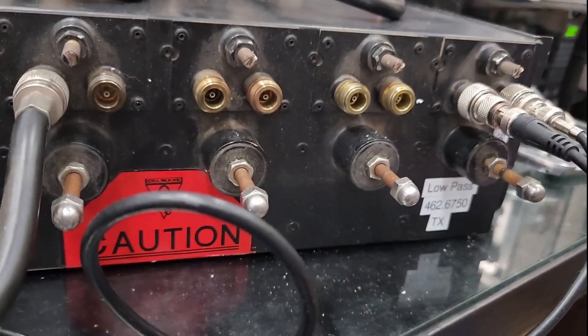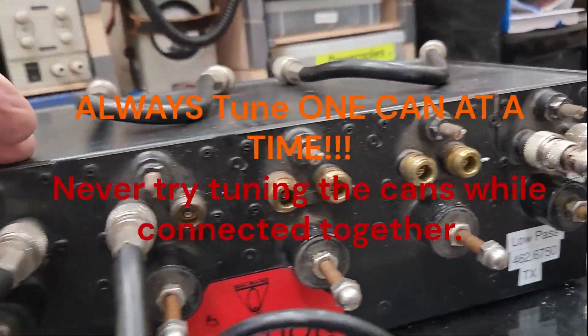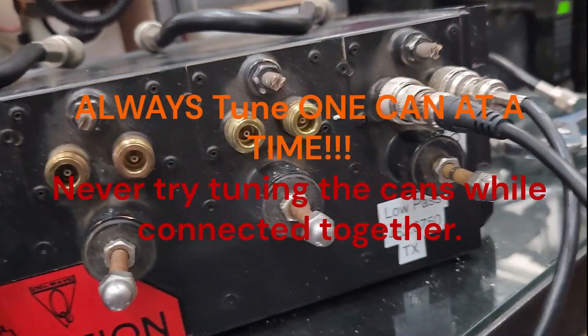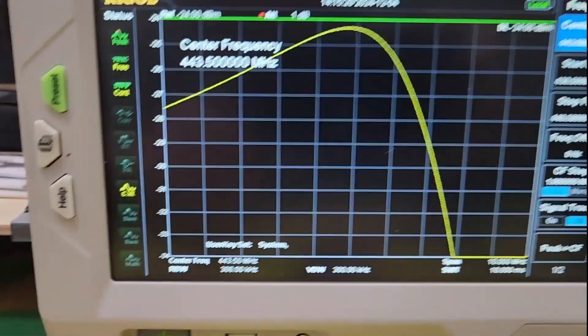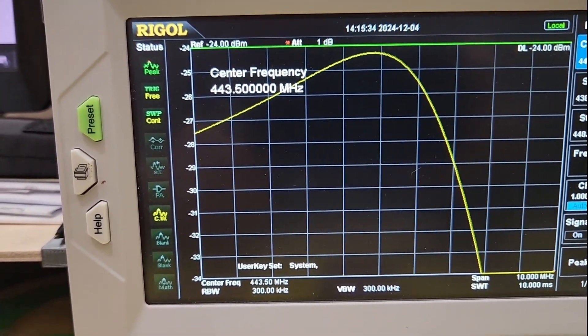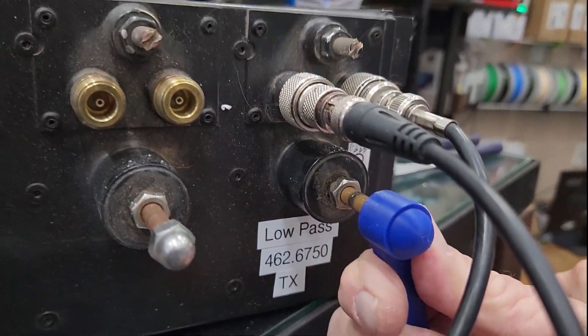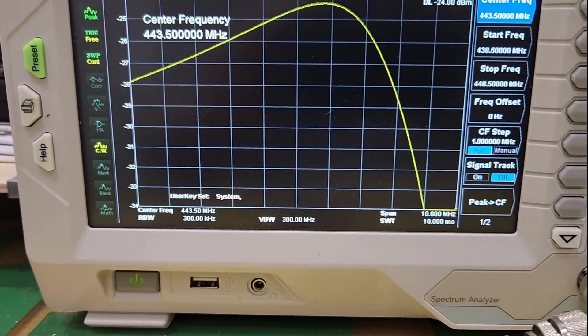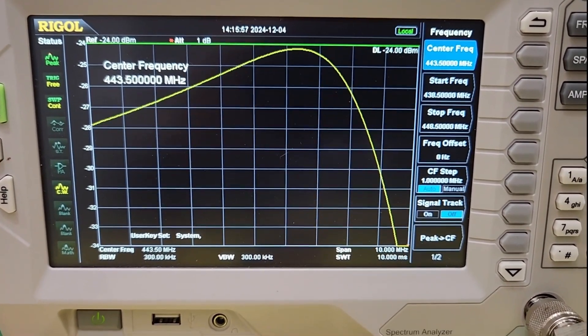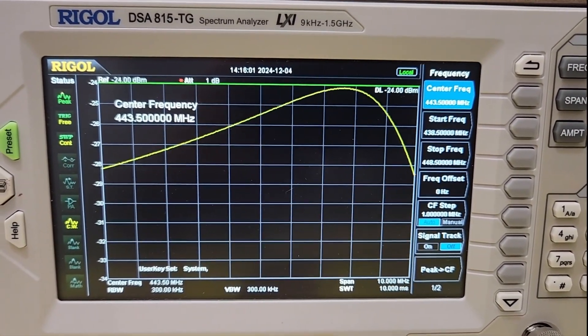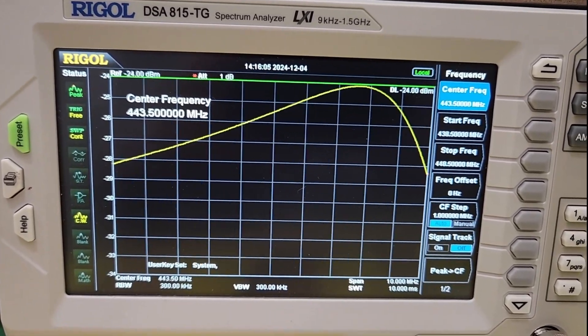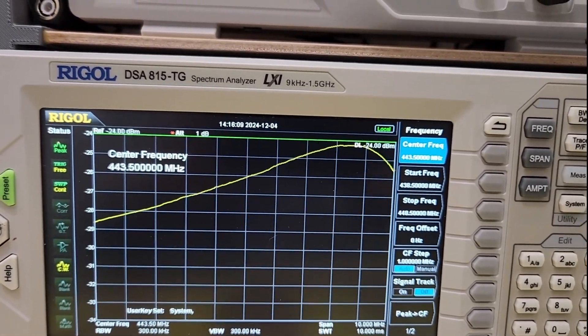As we turn this, we do one can at a time. There are six separate bandpass band-reject filter cans inside this housing. We do one at a time. I've already set up the tracking generator to find that this is tuned to the center frequency 443.500, and we will start turning right here. As you can tell, we are moving it, and we're going to keep going here until we are at 462.675.